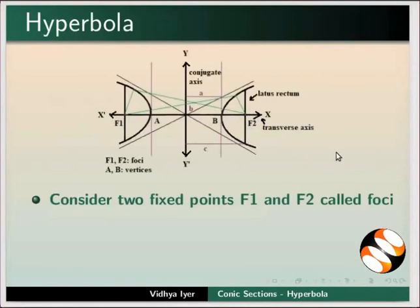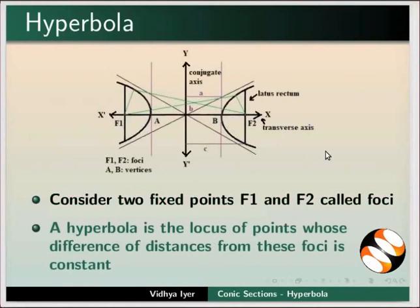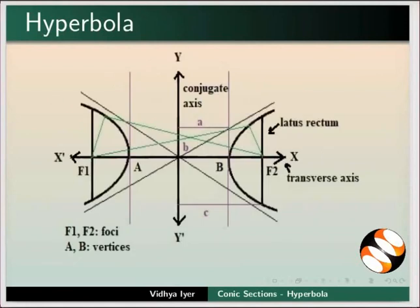Hyperbola: Consider two fixed points F1 and F2 called foci. A hyperbola is the locus of points whose difference of distances from these foci is constant.